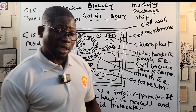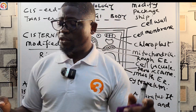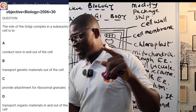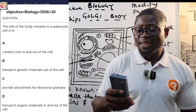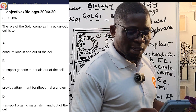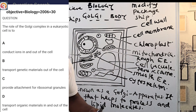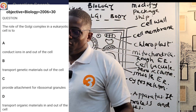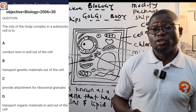Now let's go back to the question from 2006, number 30. The role of the Golgi complex in a eukaryotic cell: A) conduct ions in and out — very wrong. B) transport genetic materials out — also very wrong. C) provide attachment for ribosomal granules — very wrong. D) transport organic materials in and out of the cell — this is the correct answer.